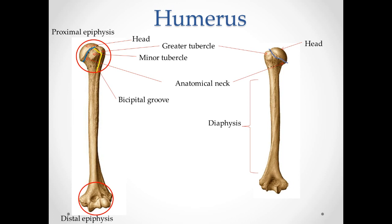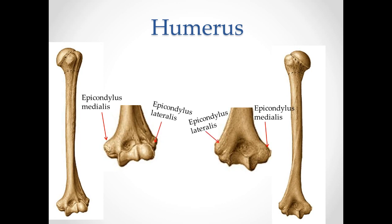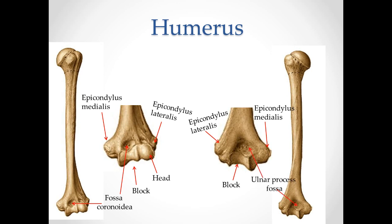Here the tendons of the long head of the biceps are attached. On the distal epiphysis, epicondylus medialis is located — it is larger than the lateral one and is located on the side of the head of the humerus. Epicondylus lateralis. The head and the block, which lies medially, serve to articulate with the ulna. Fossa coronoidea is located in front of the block — when bending in the elbow joint, the coronoid process of the ulna bone enters it. There is also an ulnar process fossa and the groove of the ulnar nerve on the dorsal side of the bone. On the diaphysis we can see the groove of the radial nerve.